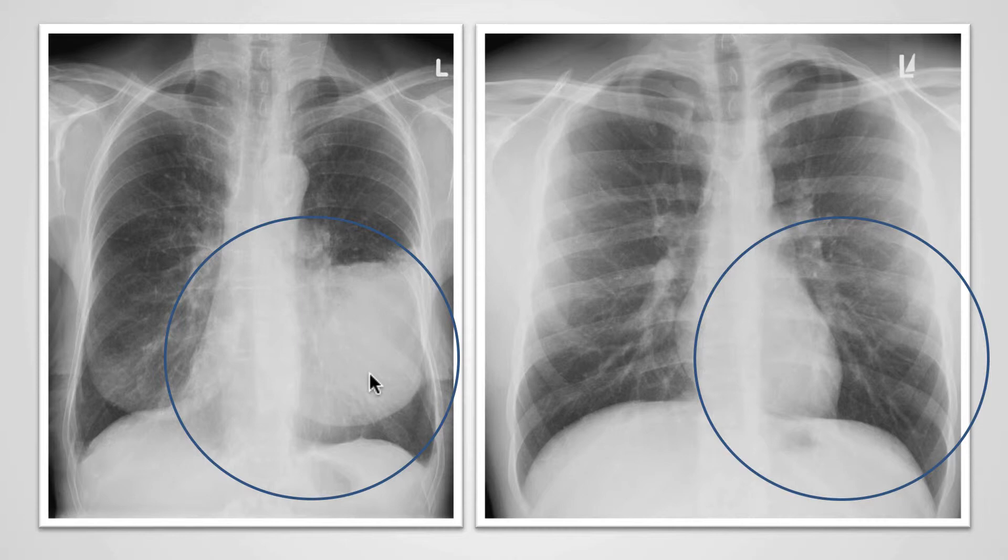This is because this patient has a pneumonia. The pneumonia is soft tissue density and lies adjacent to the heart. Because of the silhouette sign, we only see one structure in this region, which is this white area, the sum of the pneumonia and the heart border.